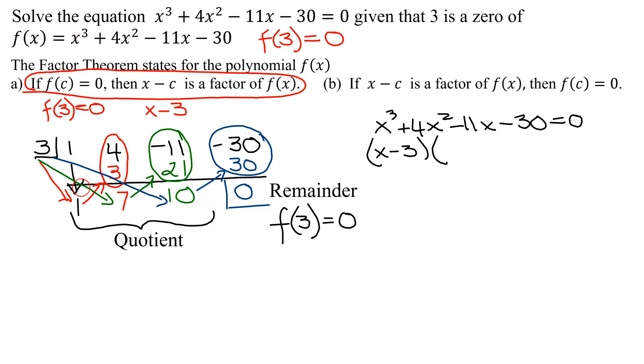So I'm going to have an x² and an x term. So my quotient is x² + 7x + 10.